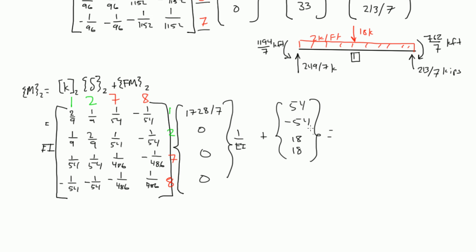And if we solve that out, I notice again the EIs cancel. We get 762 over 7, negative 186 over 7, 158 over 7, and 94 over 7. And these values correspond to the reactions happening at degrees of freedom 1, 2, 7, and 8.